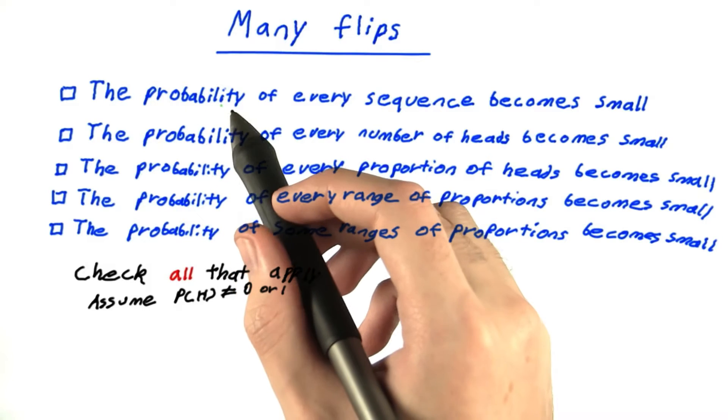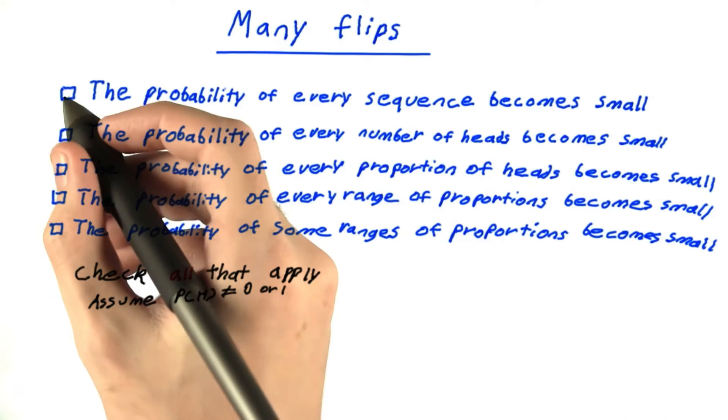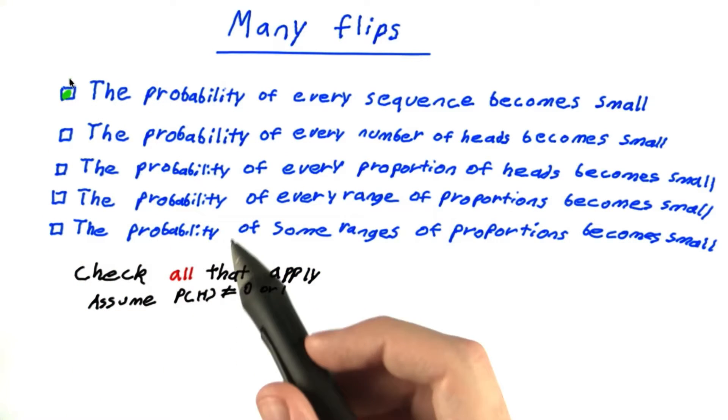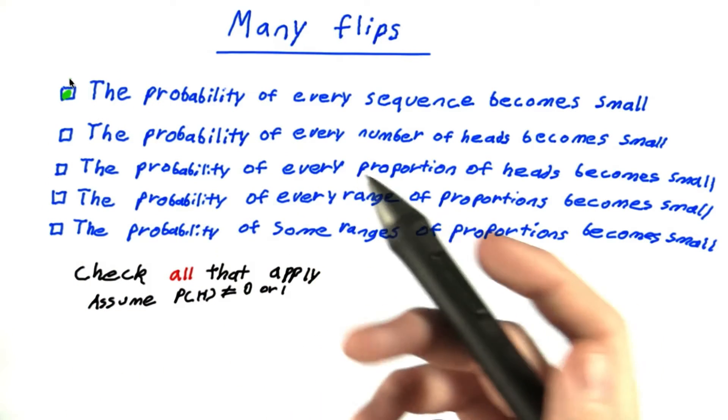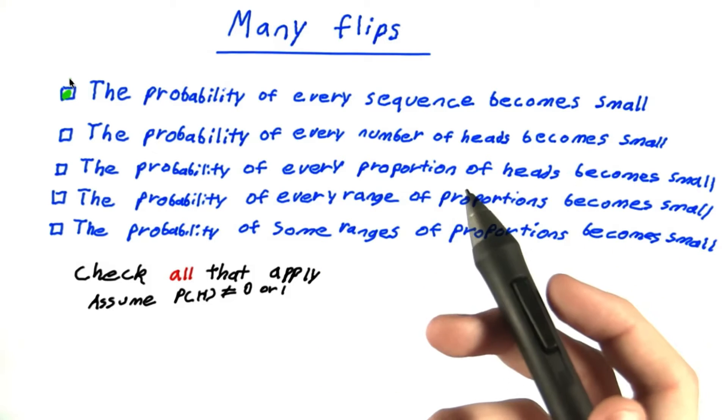The answer is the probability of every sequence becomes small. This is true because there become more and more sequences. Every time you flip a coin, you double the number of sequences.